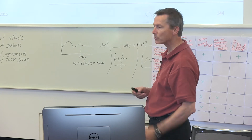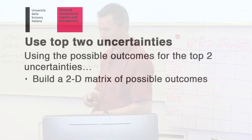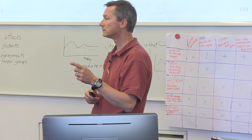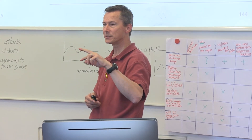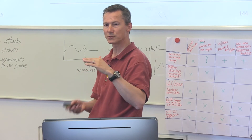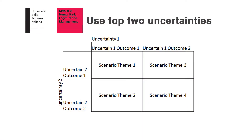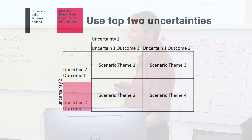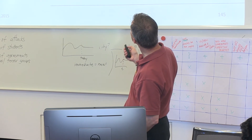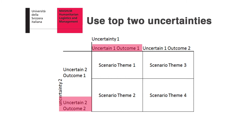The way we will do that is we will use a two-dimensional matrix. Remember, you rank the uncertainties — which one had the greatest impact on the focus question. So now you're going to take the top two uncertainties that had impact on the focus question of those you identified. You know that you have uncertain outcomes. Here's the first uncertainty and one of the outcomes, and then the same uncertainty with the other outcome. On this side you have the second highest uncertainty with its two possible outcomes. Then you simply look at the interaction of those two — uncertainty one with that outcome combined with uncertainty two with this outcome gives you a scenario theme.